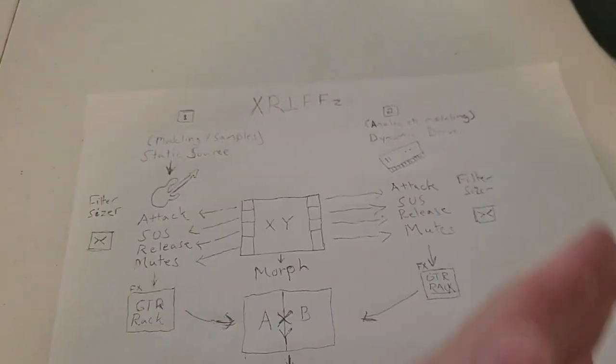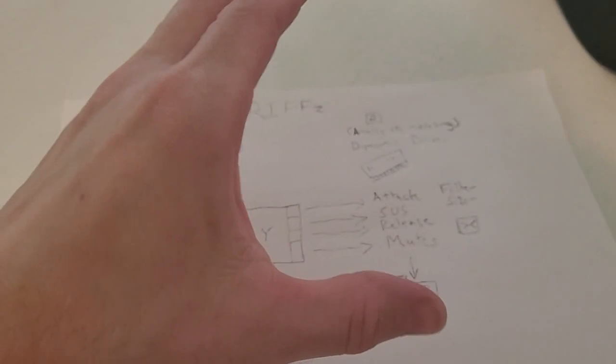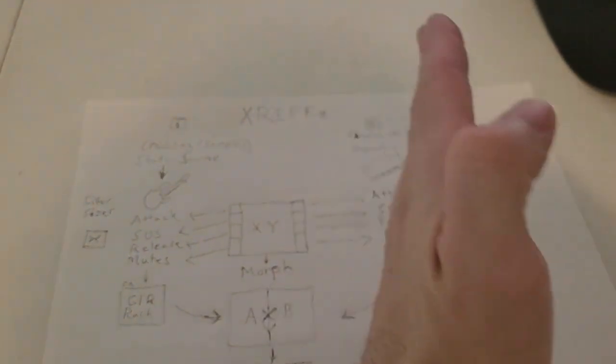And this section is the fuzzy, synthy, trippy, crazy, fattening, texturizing process. This is section two.